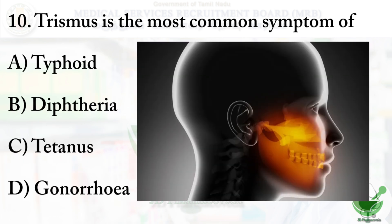Question number ten: trismus is the most common symptom of — option A: typhoid, option B: diphtheria, option C: tetanus, option D: gonorrhea. The correct option is option C, tetanus. Trismus refers to muscle spasms in the temporomandibular joint, that is, in the jaw region.